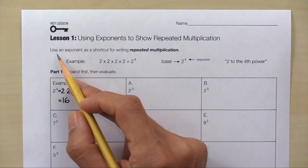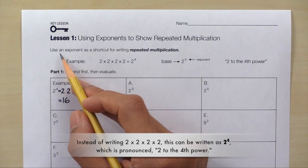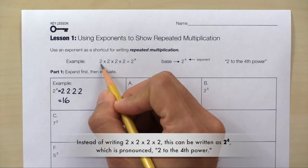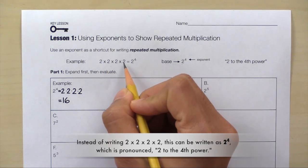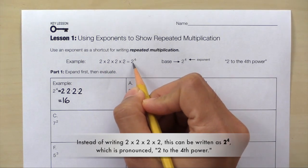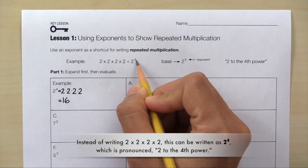Lesson 1: using exponents to show repeated multiplication. Use an exponent as a shortcut for writing repeated multiplication. For example, instead of writing 2 times 2 times 2 times 2, this can be written as 2 to the fourth power.